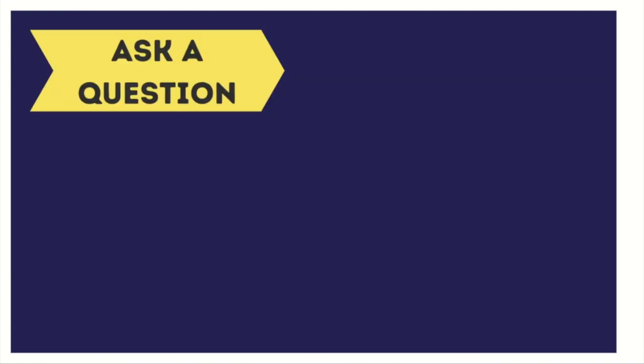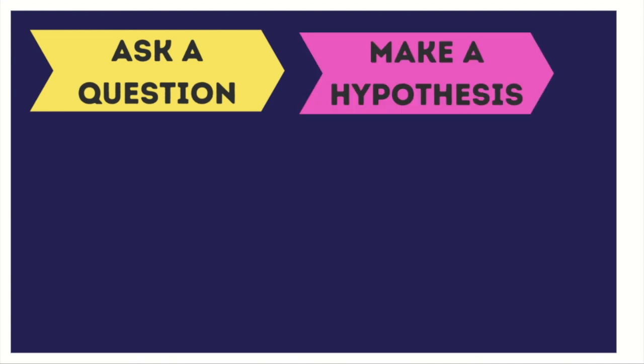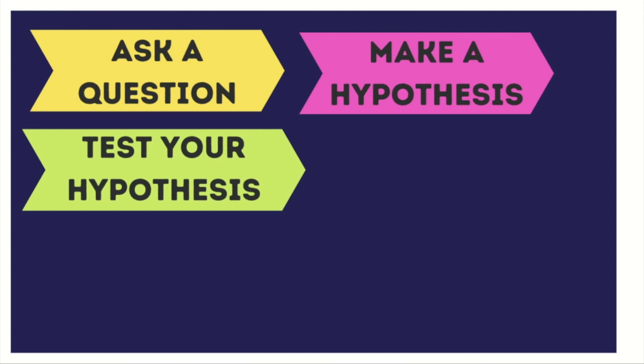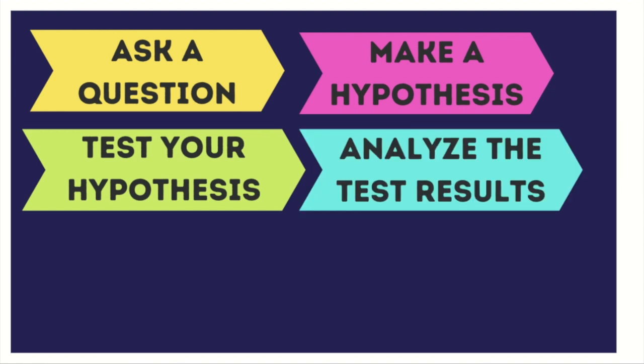The first main step in any scientific method is to notice something and ask a question about it. That's why curious people make good scientists. The next step is to make a hypothesis — you might have heard it described as an educated guess, but it's actually more than that. It's an inference we can make that can absolutely be tested. Data is the information you gather when you test your hypothesis.